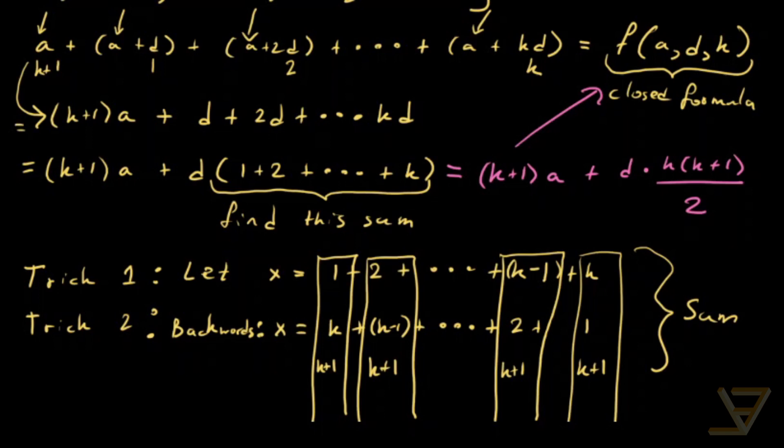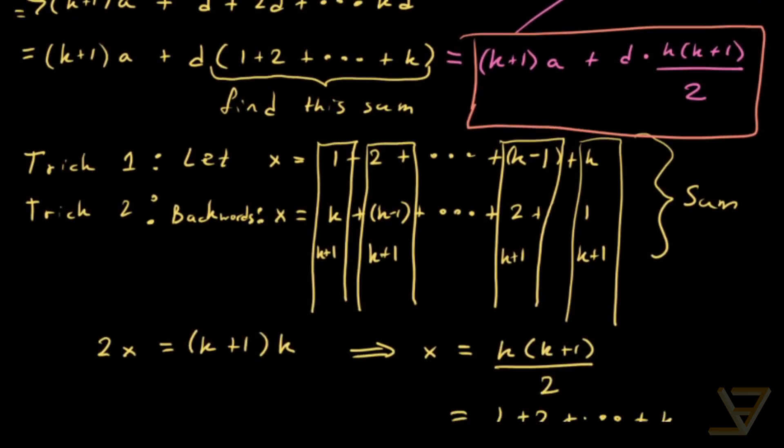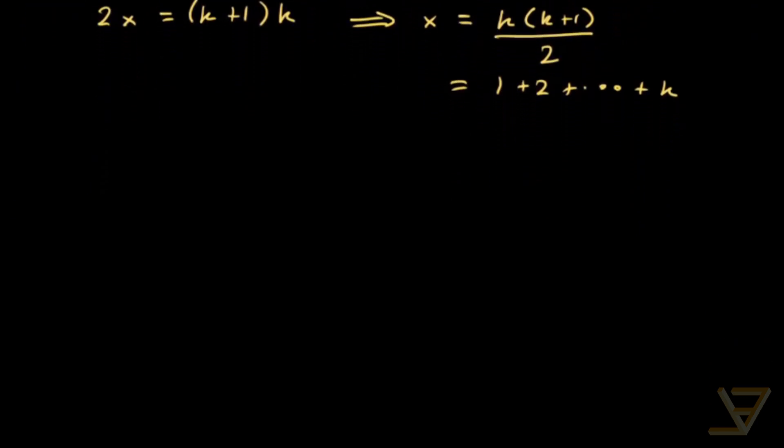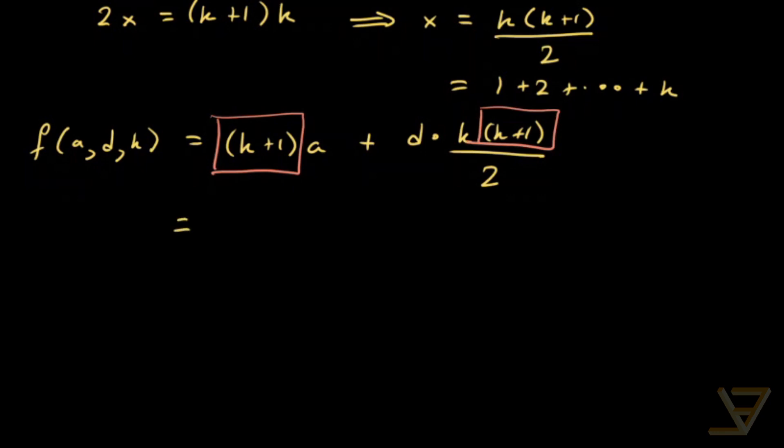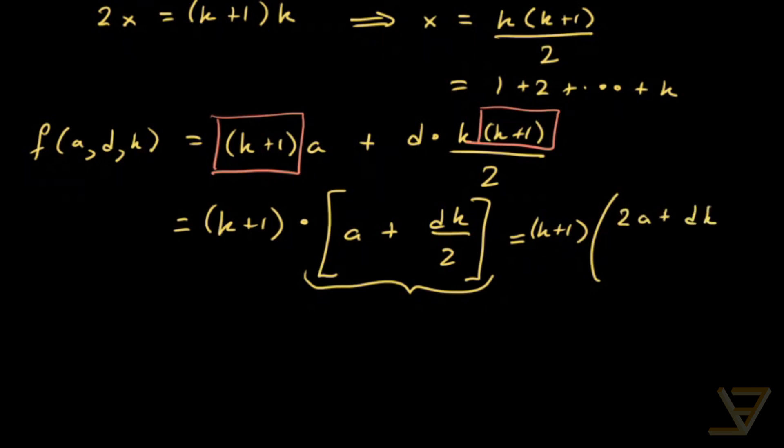But this is kind of hard to remember. We've got this formula here, but it's not that easy to remember. So let's see if we can find a better way of stating it. The formula in terms of A, D, and K is equal to K plus 1 times A plus D times K times K plus 1 over 2. What you might notice is that the K plus 1 appears here and it appears over here. So we can factor it out. So we get K plus 1 times A plus DK over 2. And that is equal to K plus 1 times 2A plus DK over 2.